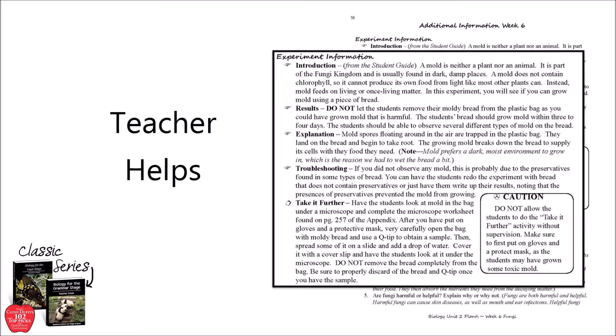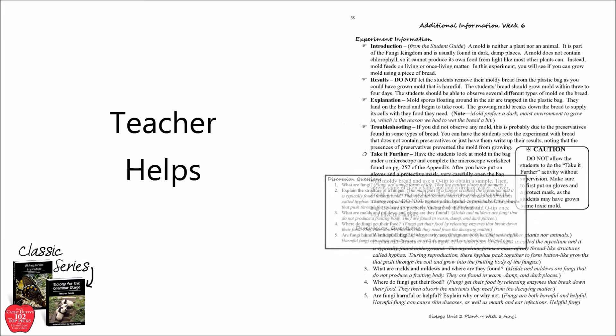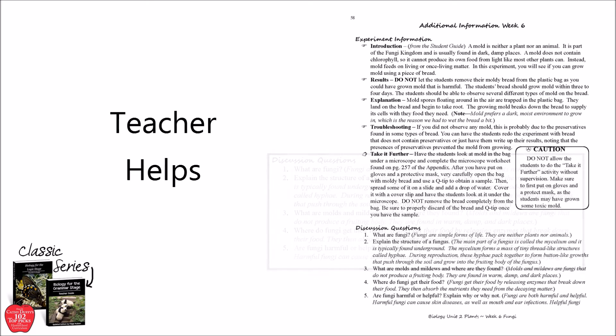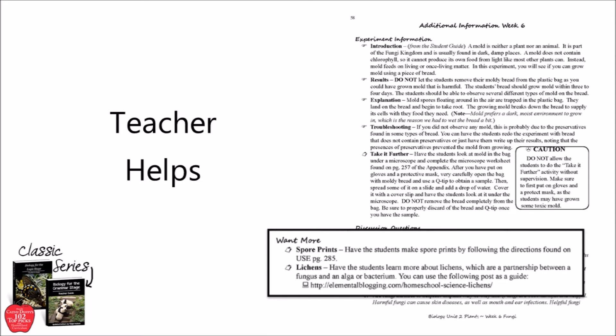The first section contains information about the week's experiment. This begins with the introduction from the student guide, which is followed by the expected results and the explanation of the science behind the experiment. Finally, you will find ideas for taking the experiment learning a bit deeper. Next, you will see a list of possible questions along with the answers, so that you can lead a fruitful discussion time without having to read the section yourself. The discussion questions are followed by the want more activities, which you can use to enhance what the students are learning from that week.